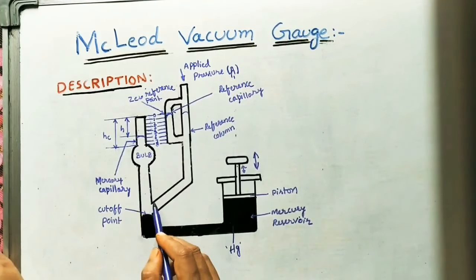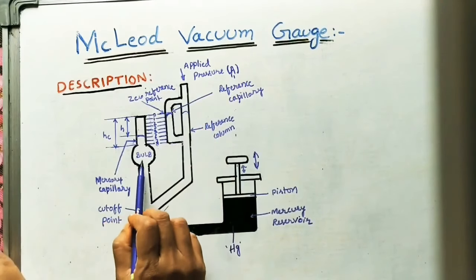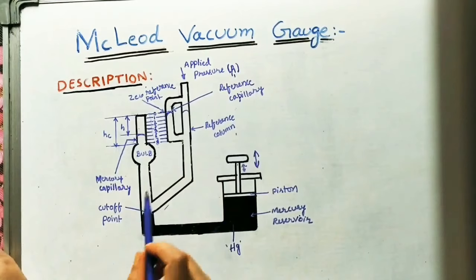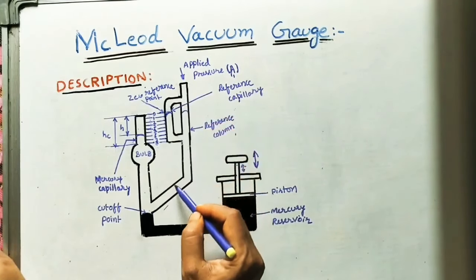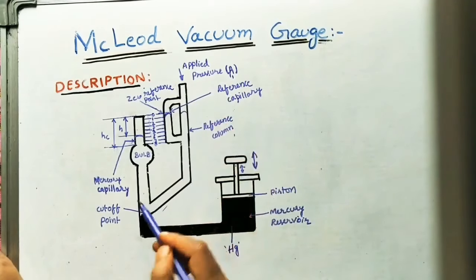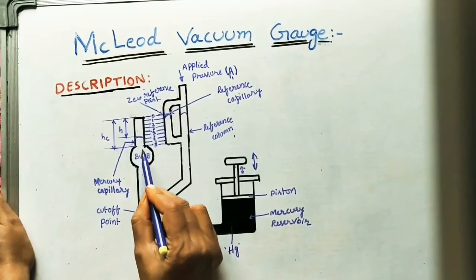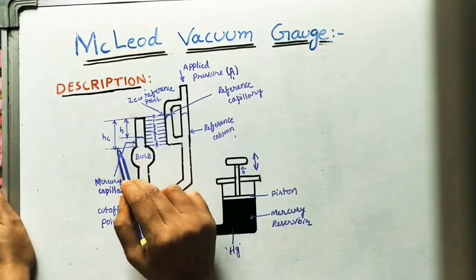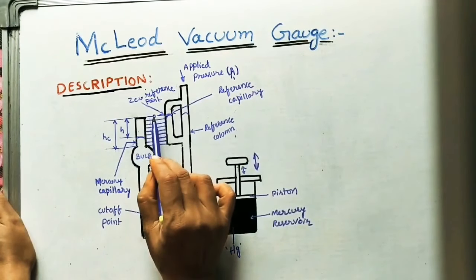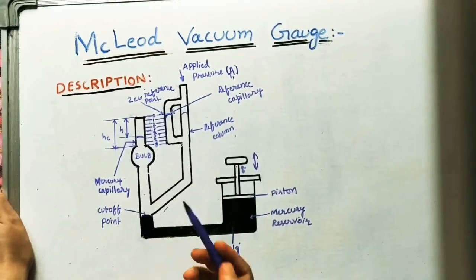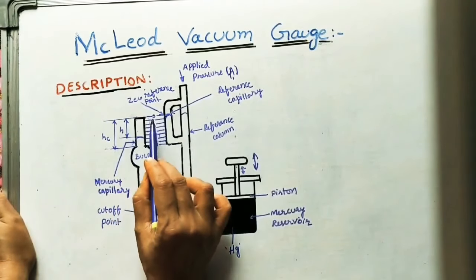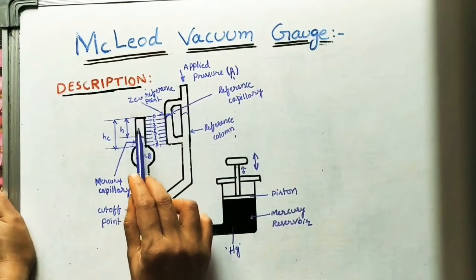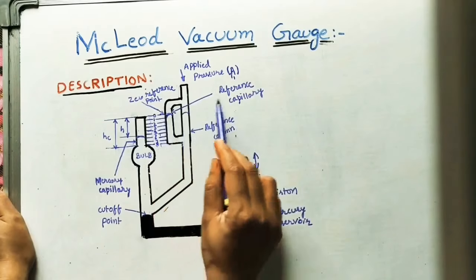The mercury reservoir is connected to one tube. Here we are using one capillary tube, and here also one capillary tube. Capillary tube means a small diameter pipe. This capillary tube is connected to one big pipe, which is called the reference column. If I apply more pressure, mercury will fill the bulb and come up to the zero reference point. This height of mercury can be measured using the scale fixed between the two capillary tubes. The first capillary is called the mercury capillary, and the second is called the reference capillary.